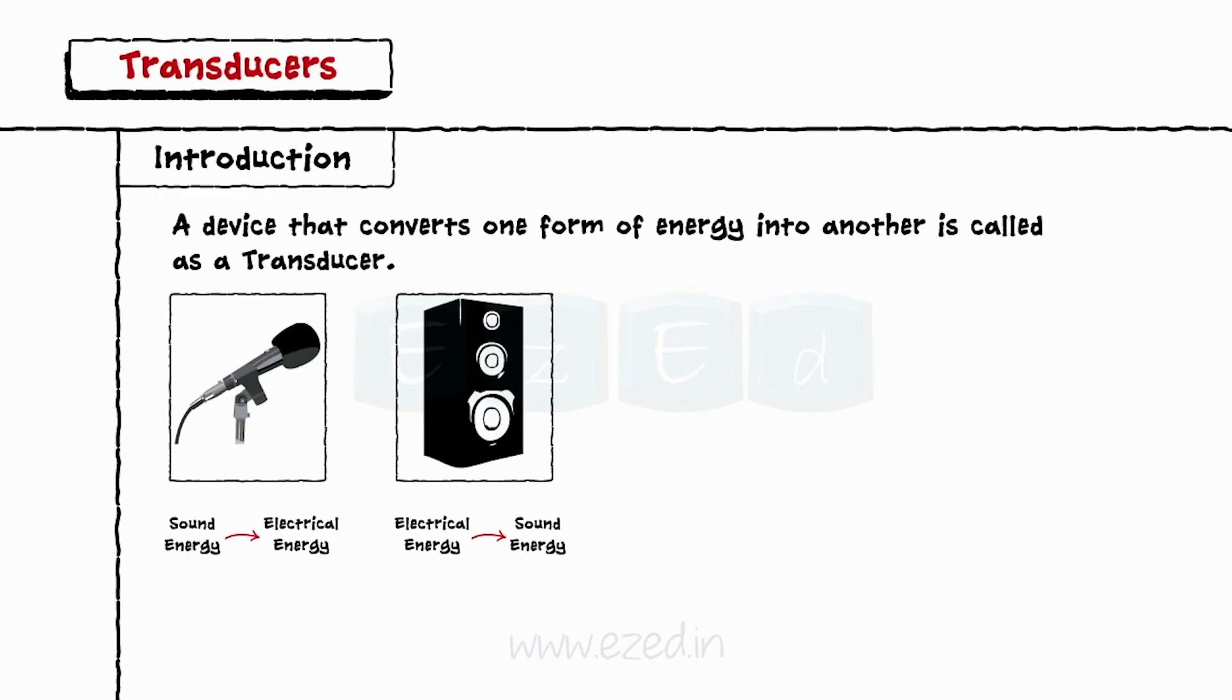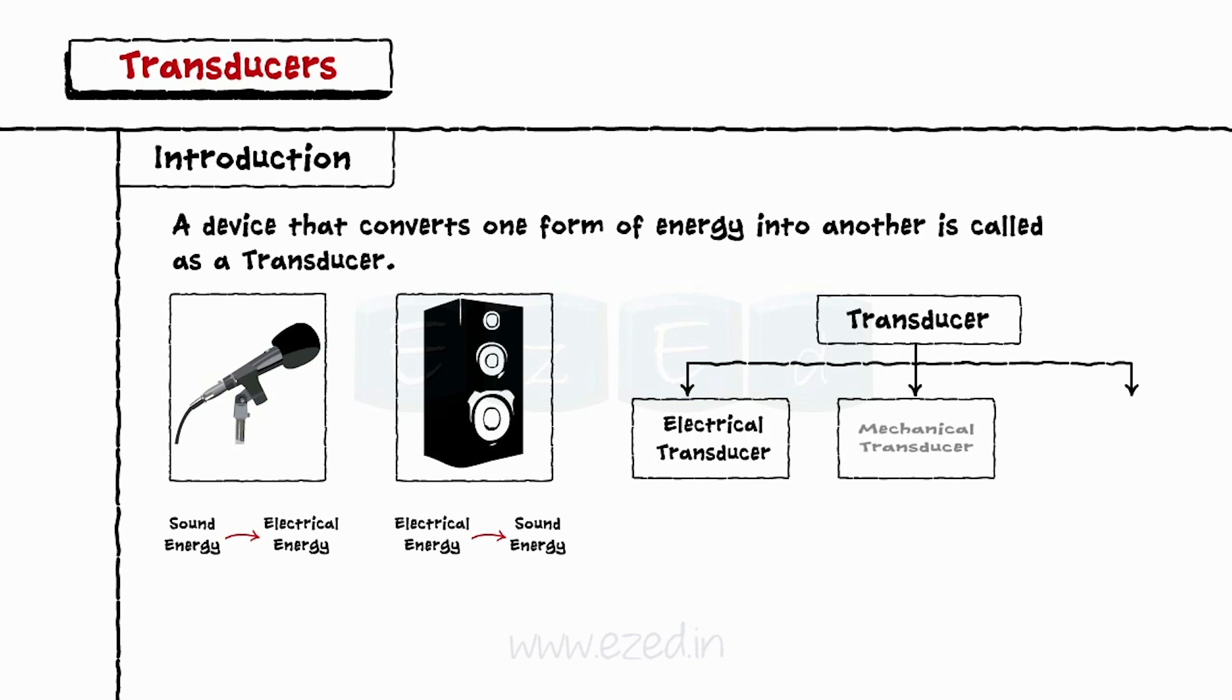Depending on the principle of operation, transducers can be classified into basic types such as electrical transducer, mechanical transducer, thermal transducer, etc.